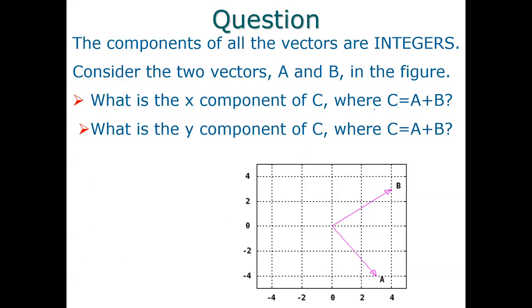All right, so we have an example to do here. So we have two vectors graphed out, and we want to read the graph to see the components of the vector. So vector A here is 3 to the right. So this here is 1, 2, 3, right? There's two lines between each of these. And so that means the x component is 3. And then in the y component, it is down minus 4. So that means our vector A is 3 minus 4.